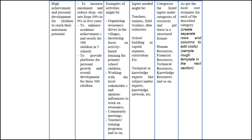Inputs needed might be teachers, trainers, field workers, data collectors, school building as a capital expense, curriculum, etc. In the input resource categories step, try to categorize the listed inputs under categories of resources and put these in a structured format, like human resources, financial resources, technical resources, knowledge resources, and so on. And the last step is costing estimation. As per local cost estimates for each described category, create separate rows and columns to add costs. Once we have these mapped out, we can start cost estimation for each of them.